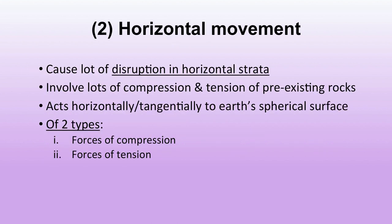The second type of slow movement is horizontal movement. It causes lots of disruption in horizontal strata, involving compression and tension of pre-existing rocks. It acts horizontally or tangentially to earth's spherical surface. There are two types: forces of compression and forces of tension.